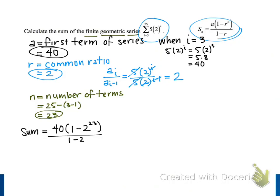So we can simplify this now. In the numerator we get 40 multiplied by 1 minus this big number, 8,388,608, and we divide by negative 1. So we can take that 40 and divide it by negative 1, and we get negative 40. And then we are going to multiply it by the quantity inside the parentheses, and we get negative 8,388,607.